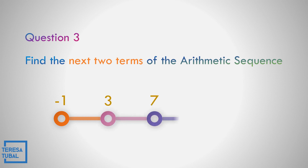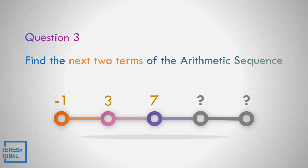Question number 3: Find the next two terms of the arithmetic sequence negative 1, 3, and 7. Correct. The answer is 11 and 15, because the common difference is equal to 4. How to get 4? By subtracting the second term by the first term: 3 minus negative 1, which becomes 3 plus 1, equals 4. Or use the third term minus the second term: 7 minus 3, which is also equal to 4.